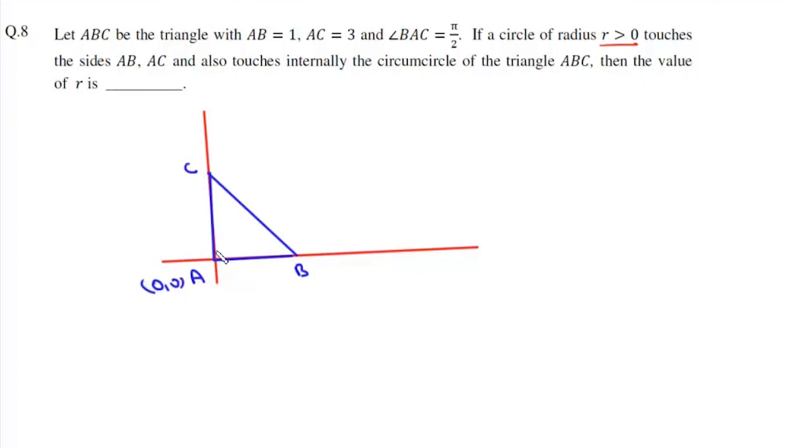Suppose A is at origin, B is at (1, 0), and C is at (0, 3). If we take the circumcircle, we know that the center of the circle will be the midpoint of BC. So this center will be (1/2, 3/2).